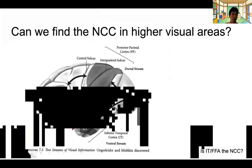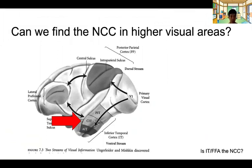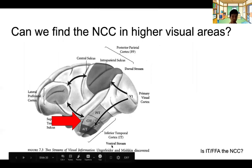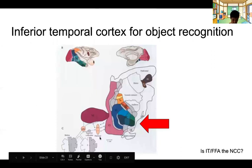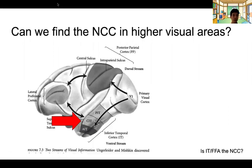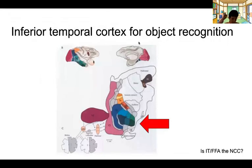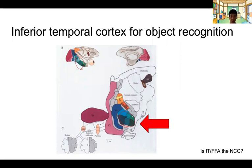Next we are going to look at candidates for NCC in the higher visual areas. By higher visual areas, after V4, what I mean is mainly these ventral visual areas or inferior temporal cortex in the case of monkeys. This is a flattened version of the cortex again, and the inferior temporal cortex locates anterior to V4. This part corresponds to the IT areas, consisted of six areas in monkeys according to Christopher Koch's book publication.